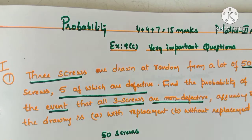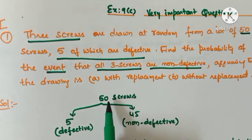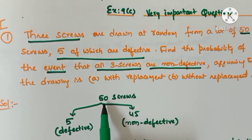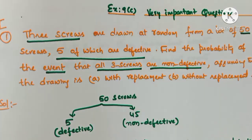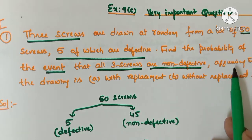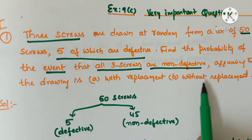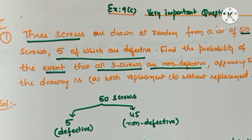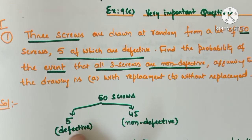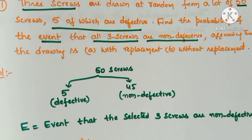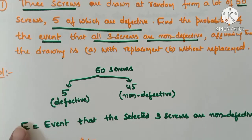We have 45 non-defective screws out of 50. So from 50 screws, 3 screws are drawn and 3 are non-defective. Let E be the event that the selected three screws are non-defective. We need to find the probability of event E.